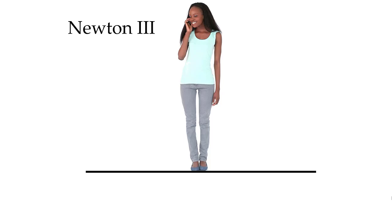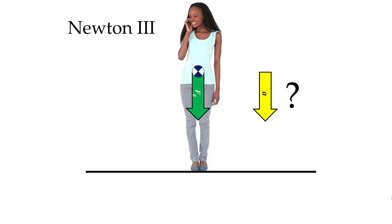Recall from our class on linear kinetics that we had a typical CSUM student. As she is standing there talking on the phone, we have a force due to gravity pulling her in the downward vertical direction. She was not accelerating, which means we were missing a force — specifically the ground reaction force, which is a contact force.